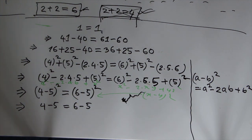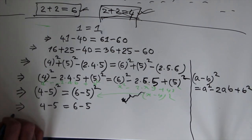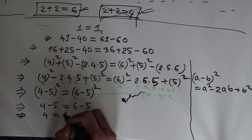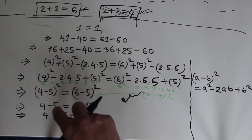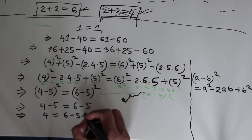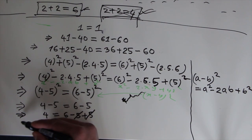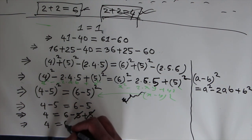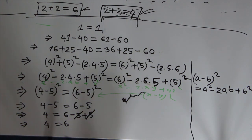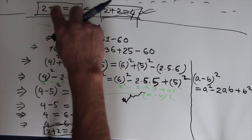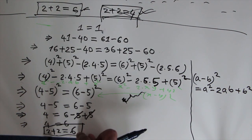Until now I did not do anything wrong that conflicts with the rules of mathematics. Now I can make this statement as: 4 equals 6 minus 5, and I can take minus 5 from the left-hand side to the right-hand side as plus 5. So this plus 5 and minus 5 eliminate each other, and the remaining is 4 equals 6. I can expand this 4 as 2 plus 2 equals 6.